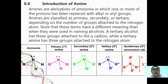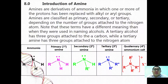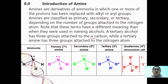Amines are derivatives of ammonia in which one or more protons have been replaced with alkyl or aryl groups. Amines are best classified as primary, secondary, or tertiary depending on the number of groups attached to the nitrogen atom. Note that these terms have different meanings than when used to name alcohols.